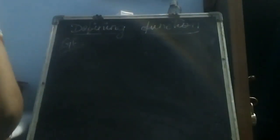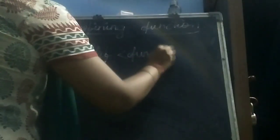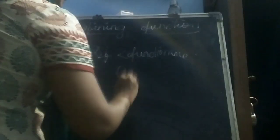Next, we are going to see how to define a function — how to create a function in our program. What is the general syntax for creating a user-defined function? The keyword `def` is used, followed by the function name.